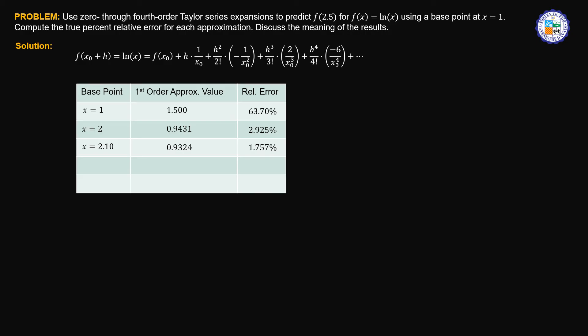The approximation improved significantly just by changing the base point. If we change the base point to 2.10, the approximated value is 0.9324 with a relative error of 1.757%. Furthermore, if we choose a base point of 2.4, the approximated value is 0.9171 with a relative error of less than 0.1%. And if we choose a base point of 2.45, the approximated value becomes 0.9165 with a relative error of only 0.0218%.